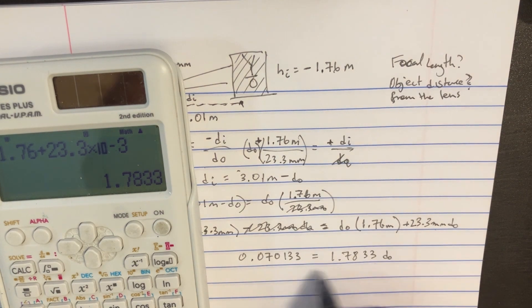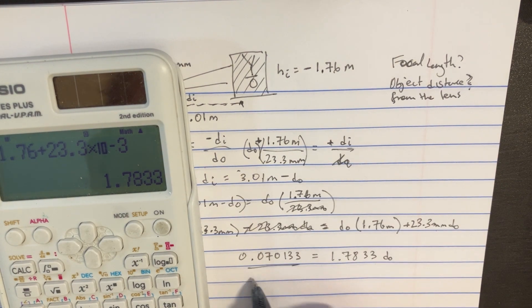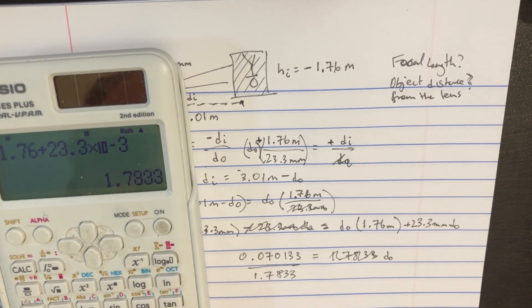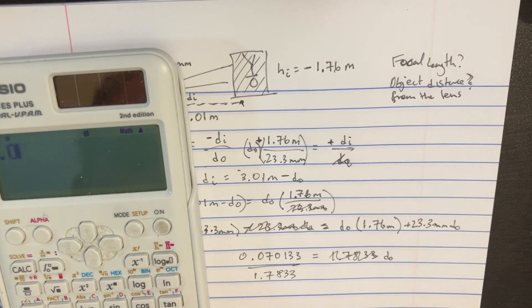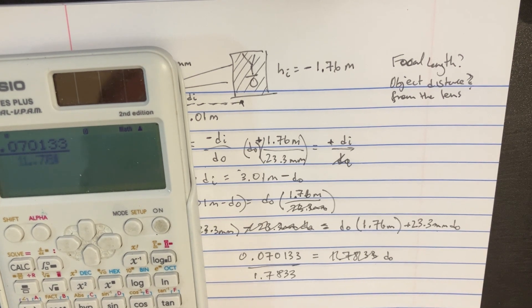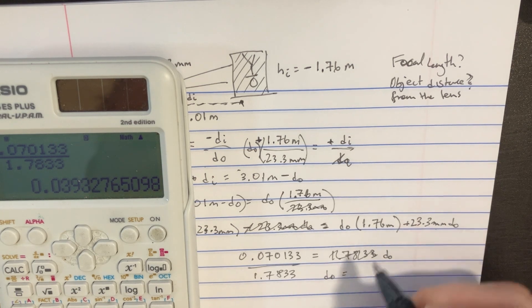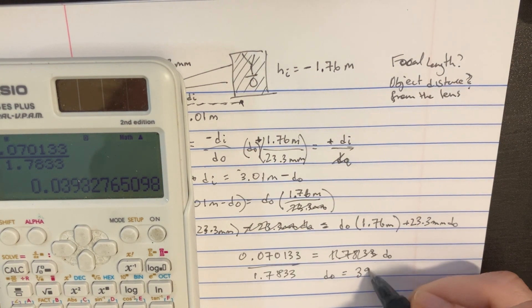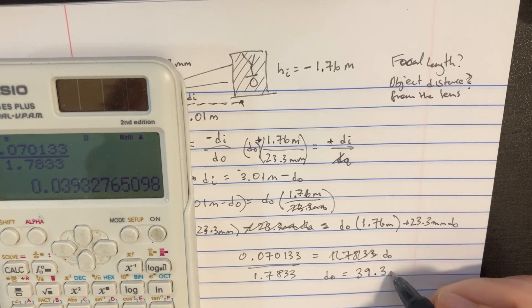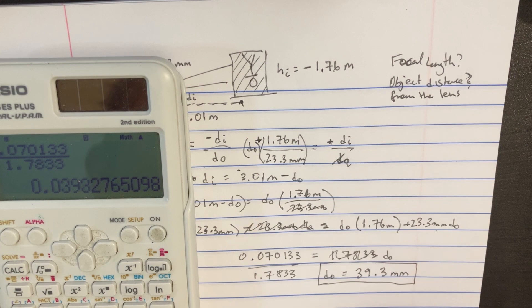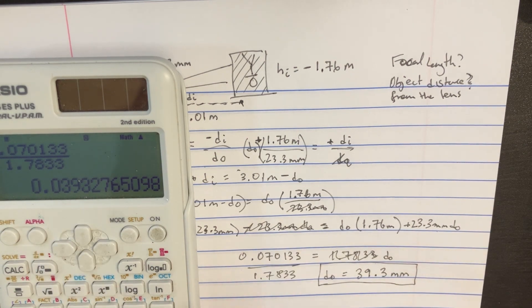And then here, we're just going to divide this side by the 1.7833. So we get 0.070133 over 1.7833, and that should give us 39.3 millimeters for the distance of the object, 0.039 meters.